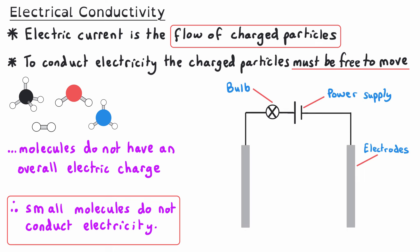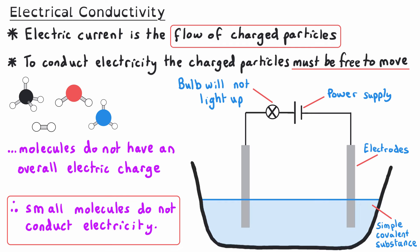So if we connected a circuit with a power supply and a bulb, and connected it up with a gap in the circuit, and then we put a material into that gap to try to complete the circuit, we could prove whether the material was an electrical conductor or not. If we were to fill the gap with some kind of substance made up of simple covalent molecules, the bulb would not light up because the circuit is not complete — the molecules do not have electrical charge, so no electric current can flow.